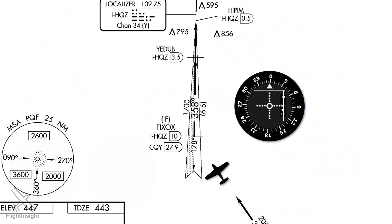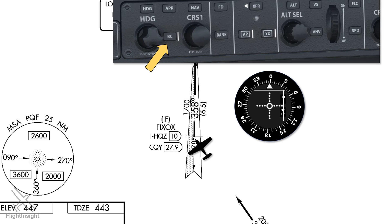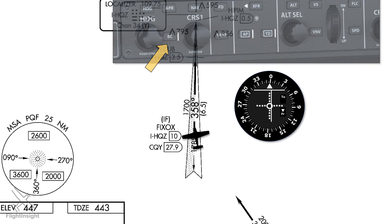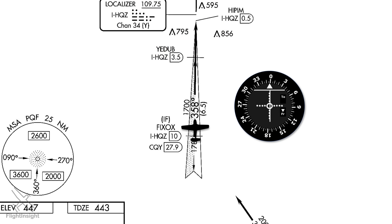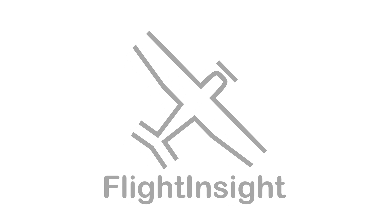Flying a back course is confusing, and one wrong turn in instrument conditions can be deadly. Make sure you're fully comfortable before attempting a back course approach. One feature some aircraft have is a back course setting on their autopilot, which tells the autopilot that the localizer it's tracking should be flown inbound with reverse sensing rather than normal sensing. If this was helpful, please click subscribe to stay up to date on every new training video coming out each Tuesday and Friday, and get access to posts and articles that'll take your training even further.